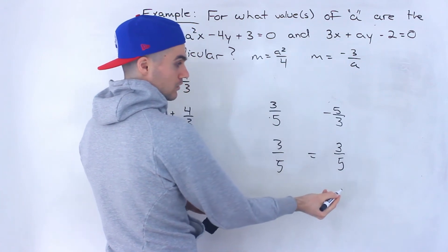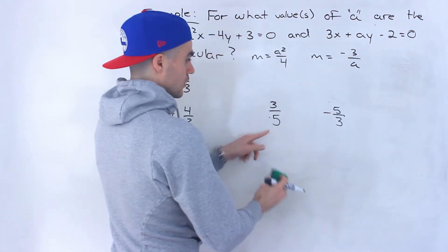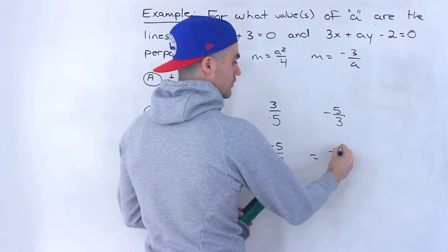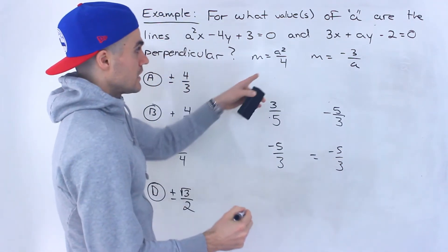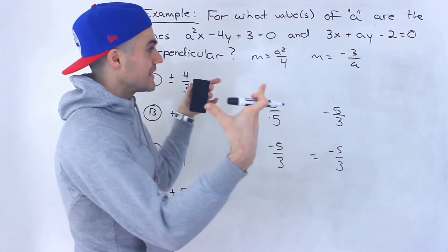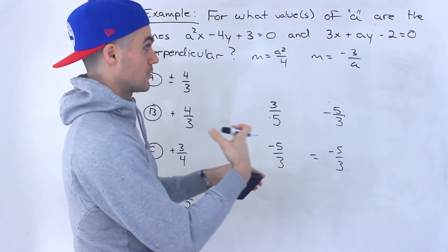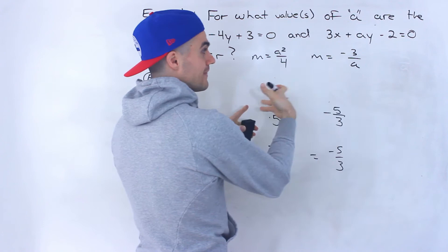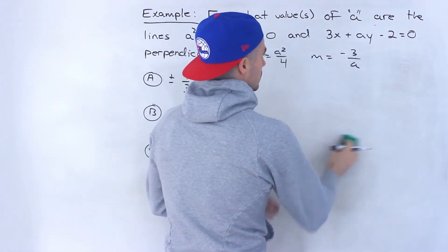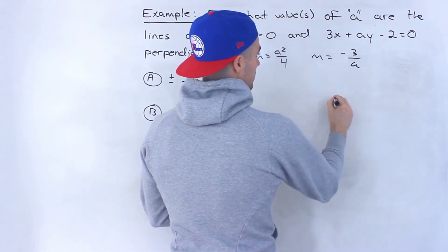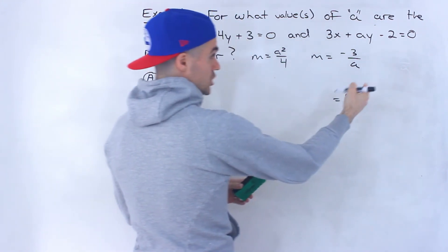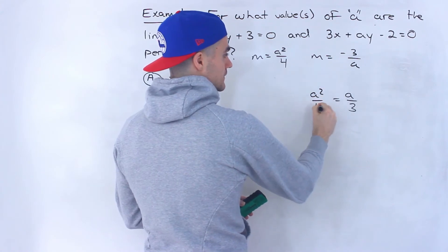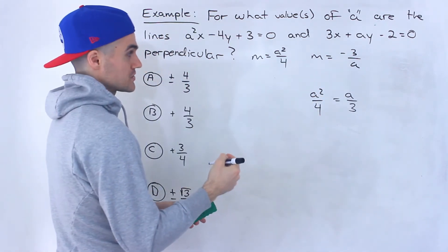So if we flip the slope negative 3 over A and change the sign, we end up with A over 3. This must equal the other slope, A squared over 4. Now we have an equation we can solve for A.